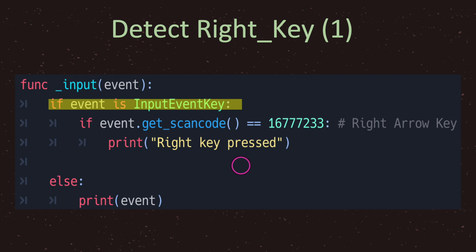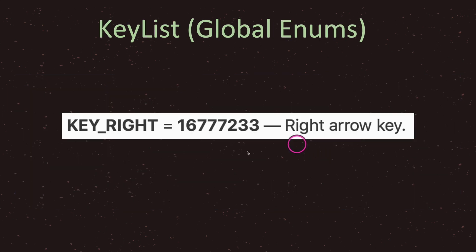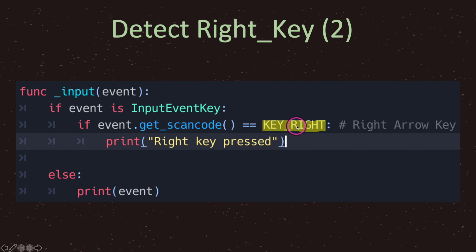We can make this easier because we don't need the raw integer value. Instead of the integer value we can replace it with the enum value. Going back, our enum value is KEY_RIGHT in all capitals — remember these global enums are case sensitive. As you can see, none of the logic changes; instead of the raw integer we use the enum name and this code will do the same thing.